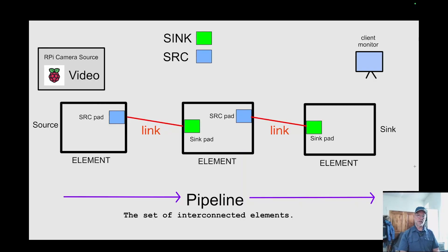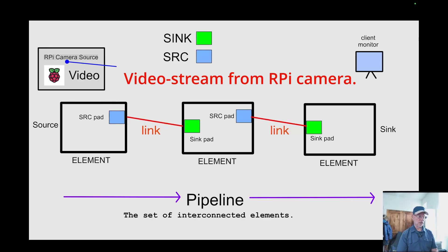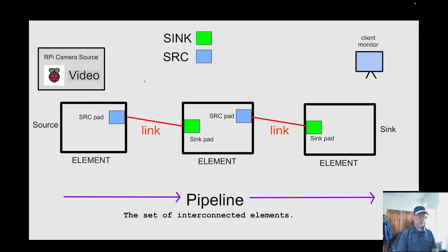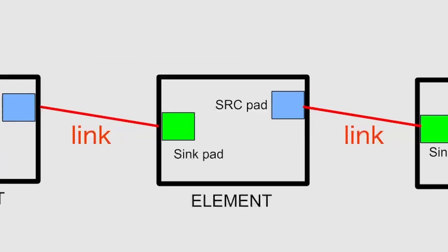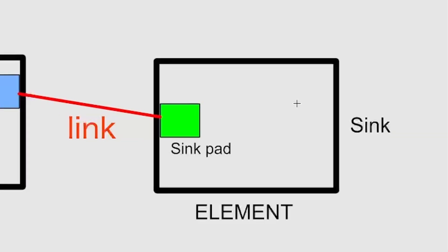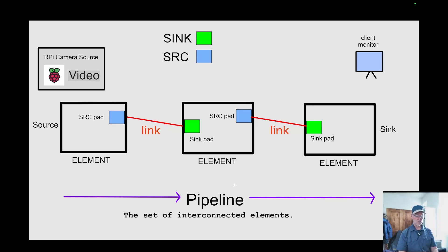Welcome to tutorial number one on GStreamer pipelines. This is an intro to a lecture I'm putting together to help individuals working with a Raspberry Pi and a camera. On the left-hand side you'll see the RPI camera source — this is video. The first area is our source element, the rectangle in the middle is just an element (it could be a plugin or a filter), and on the very far right is our sink. Everything flows downstream in the pipeline, and the set of interconnected elements all produce output at the sink on the far right.